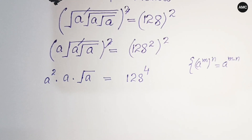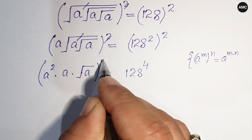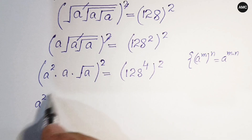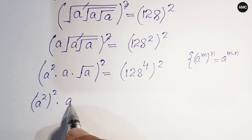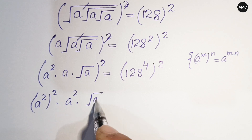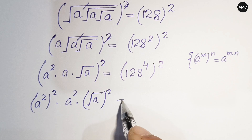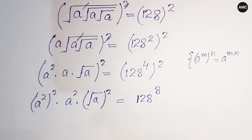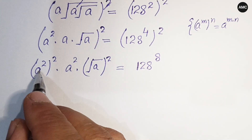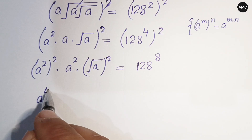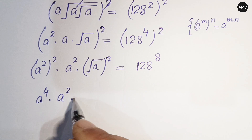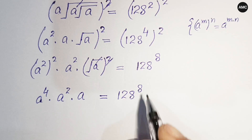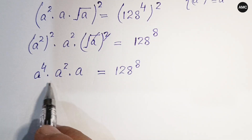Taking square on both sides again: (a squared)^2 gives a to the power 4, and the square cancels with the square root, leaving a. So we get a to the power 4 times a squared times a equals 128 to the power 8.